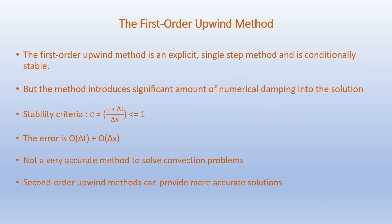The first-order upwind method is an explicit single-step method and is conditionally stable, but it introduces a significant amount of numerical damping into the solution and is generally not recommended for solving convection equations. The stability criterion is c = u·Δt/Δx ≤ 1. The errors are of the order Δt + Δx. Because of its low accuracy, second-order upwind methods can provide more accurate solutions.